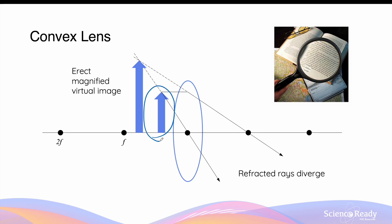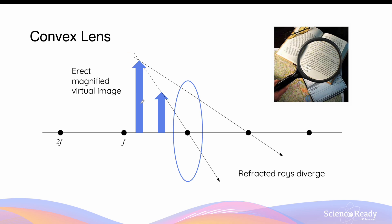When an object is placed between the focus and the center of the convex lens, something interesting happens. The light ray that was parallel to the principal axis will pass through the focus as usual, and the light ray that passes through the center of the lens will pass straight through as usual. However, in this instance, you can see that the two refracted light rays are diverging, so they will never intersect on the other side of the lens. This means in order to identify and construct the image, we need to extend the two refracted light rays using dashed lines to see where they intersect in front of the lens, on the same side as the object. This will give us an upright or erect image that is bigger or magnified, and since the image is constructed from the intersection of the two light rays on the same side as the object, it will be a virtual image. The placement of the object between the focus and the convex lens will produce a magnified image, and this is how magnifying glasses work.